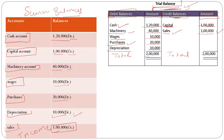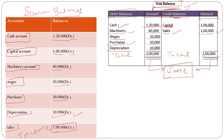Now we total all the debit balances and all the credit balances. Both sides come to two lakh rupees. We must make sure these two totals are the same. If the two balances are not equal, it means there is some error — either in the preparation of the trial balance, the ledger, or the journal. That covers the basics of trial balance. Thanks for watching.